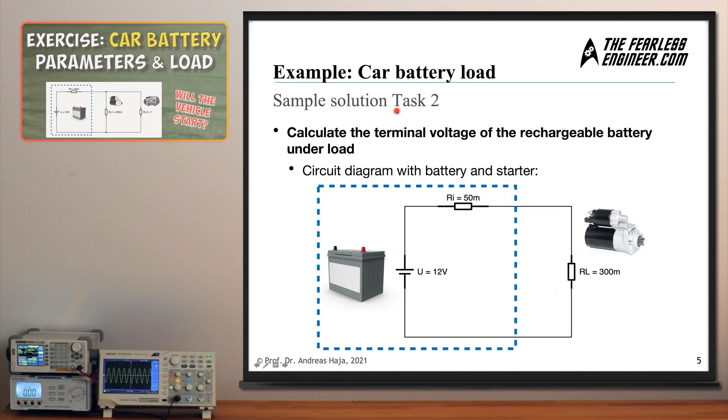Then let's take a look at the sample solution number two, which is to calculate the terminal voltage of the battery under load if the load is connected. And the circuit diagram with a battery and a starter looks like this. It's an unbranched circuit with the perfect voltage source within the battery in this model. It's of a size of 12 volts. Then we have the internal resistance 50 milliohms. Then we have the starter itself, it's 300 milliohms, and that's the circuit which we need to use for our calculations now.